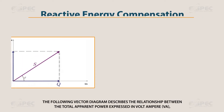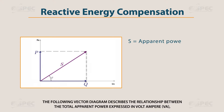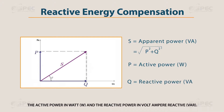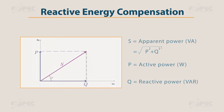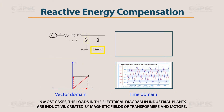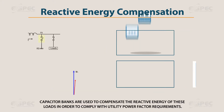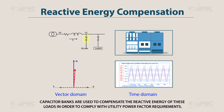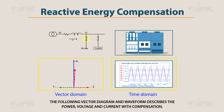The following vector diagram describes the relationship between the total apparent power expressed in volt-ampere, the active power in watt, and the reactive power in volt-ampere reactive. The graph shows the current and voltage in time domain and in vector domain. In most cases, the loads in the electrical diagram in industrial plants are inductive, created by magnetic fields of transformers and motors. Capacitor banks are used to compensate the reactive energy of these loads in order to comply with utilities' power factor requirements. The following vector diagram and waveform describes the power, voltage, and current with compensation.